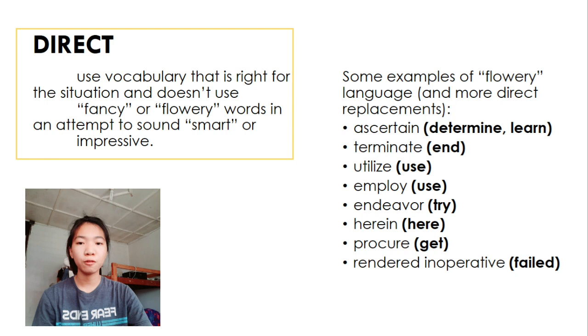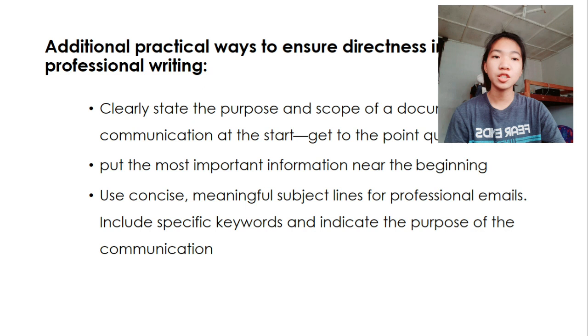Additional practical ways to ensure the readiness in technical and professional writing. Clearly state the purpose and scope of a document or communication at the start. Get to the point quickly. Put the most important information near the beginning. Use concise, meaningful subject lines for professional emails. Include specific keywords and indicate the purpose of the communication.